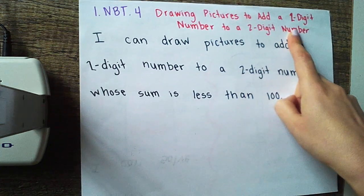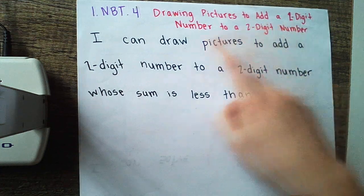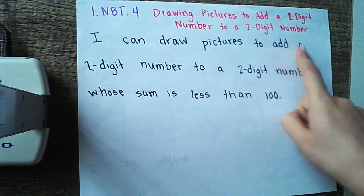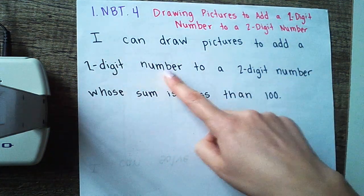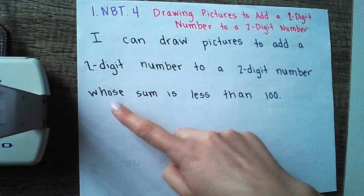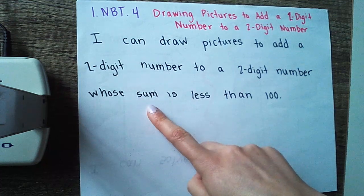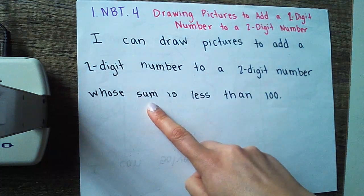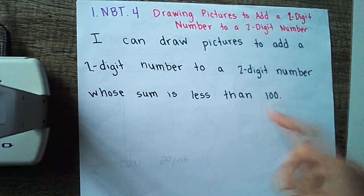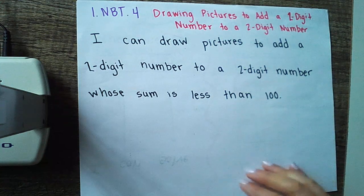So let's talk about our I can statement. I can draw pictures to add a two digit number to a two digit number whose sum — that's what we get when you put your two numbers together — is less than 100.